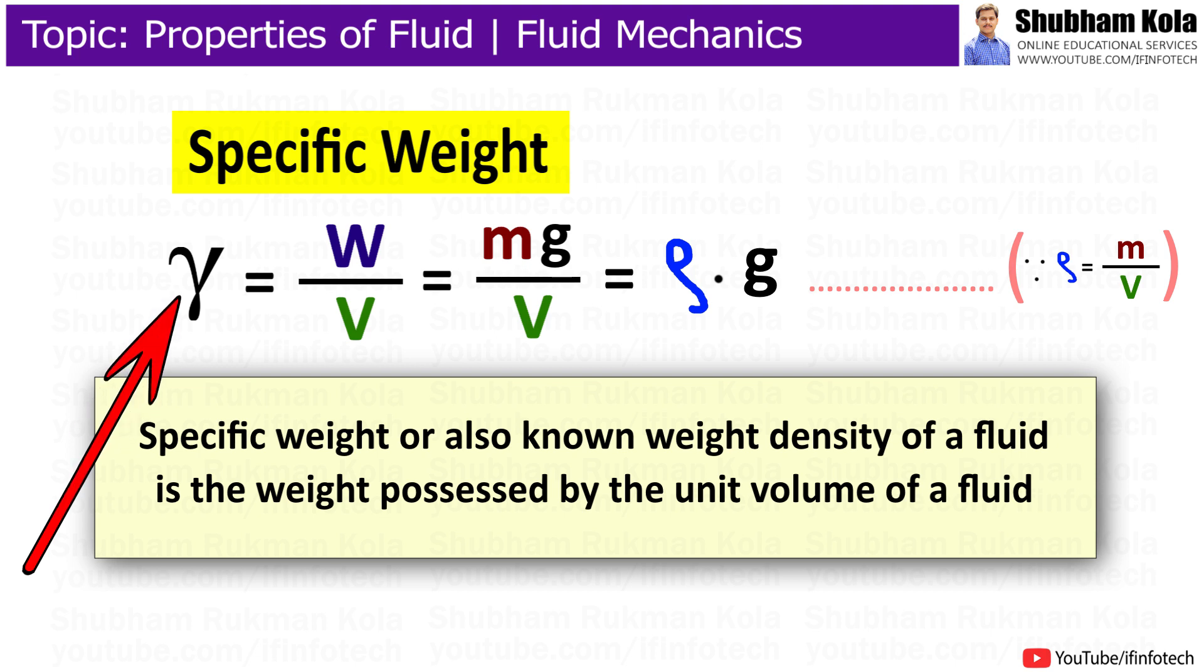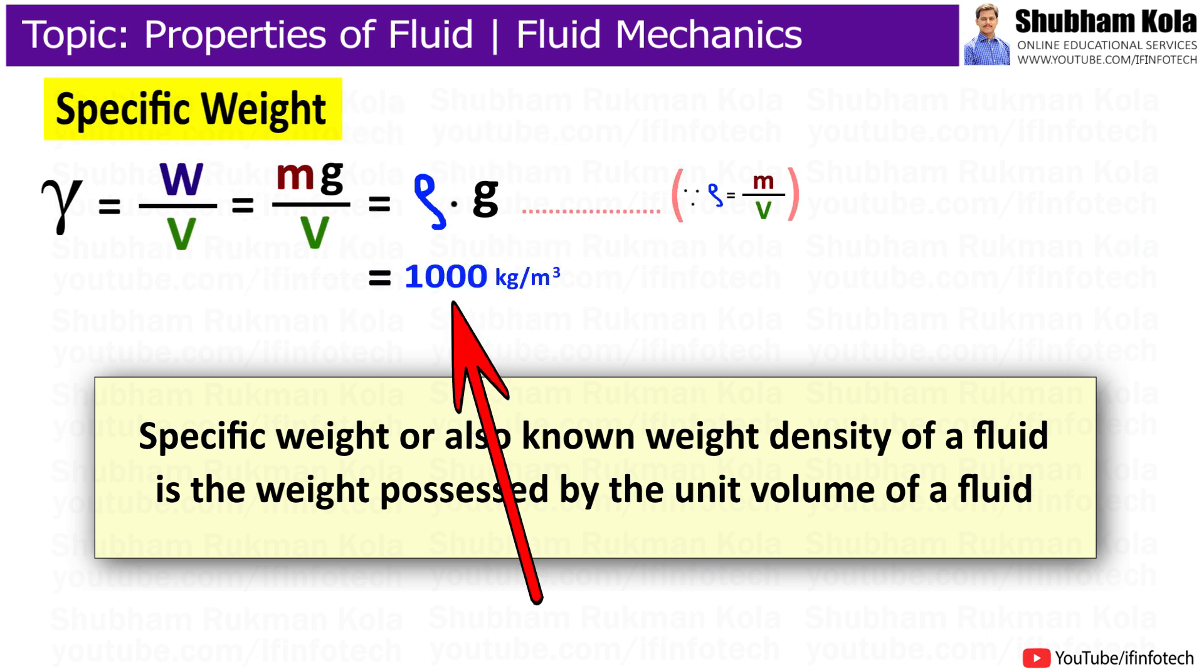Therefore, specific weight of fluid will be density times acceleration due to gravity, i.e., ρ times g, where density of water is 1000 kg per meter cube and acceleration due to gravity is 9.81 meters per second squared.